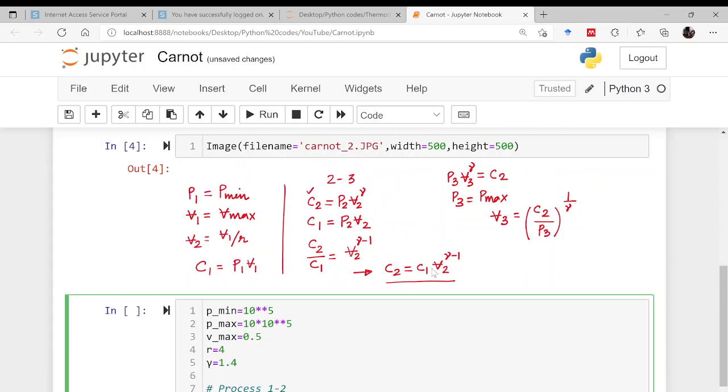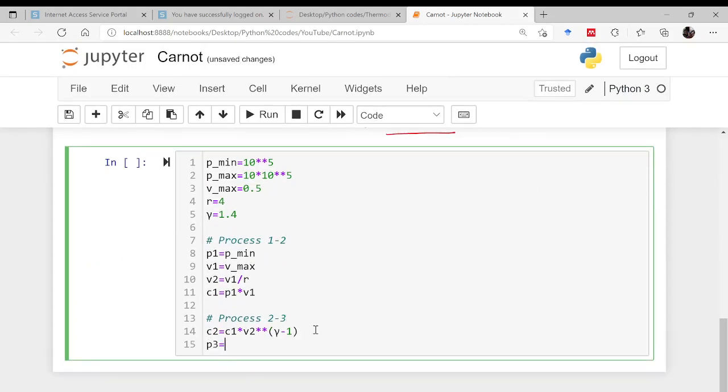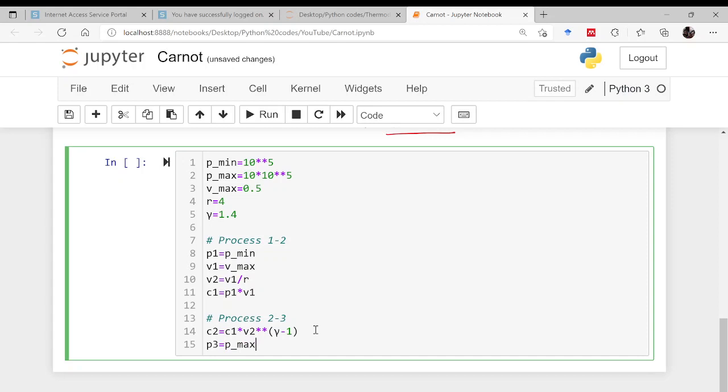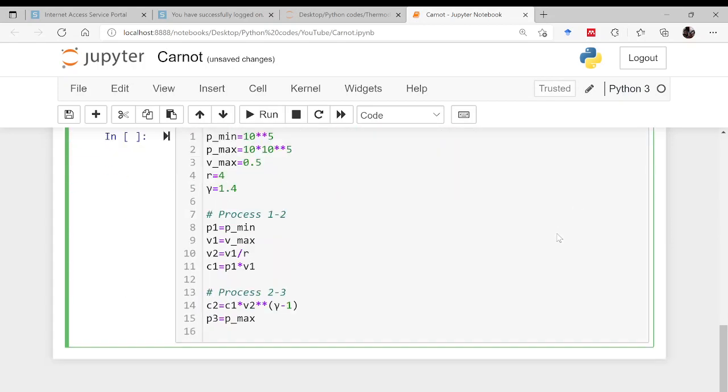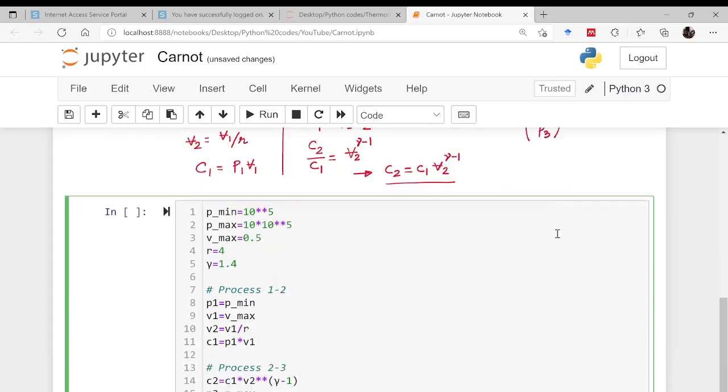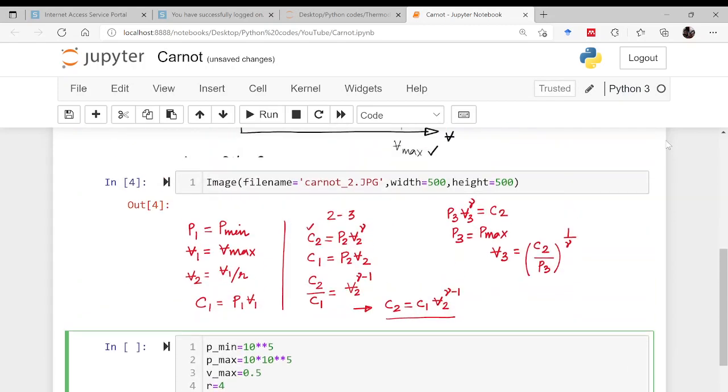Now I have to find out what is volume at point 3 with the help of the maximum pressure which is nothing but P3. P3 is equal to Pmax and then this V3 is C2 upon P3 to the power 1 by gamma. So this V3 is equal to C2 by P3 whole to the power 1 by gamma.